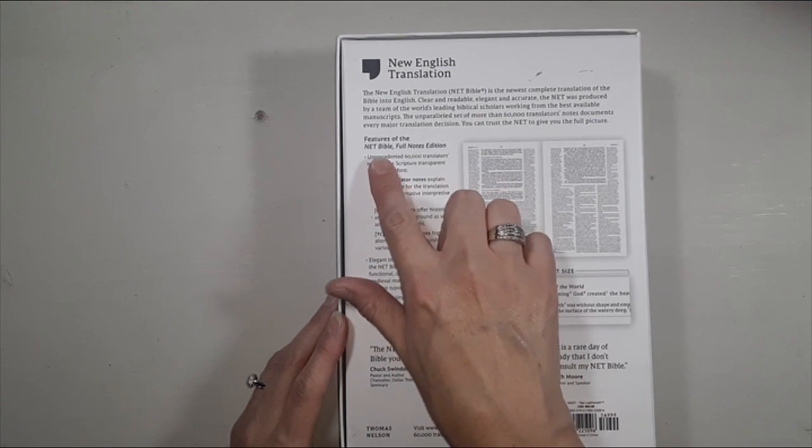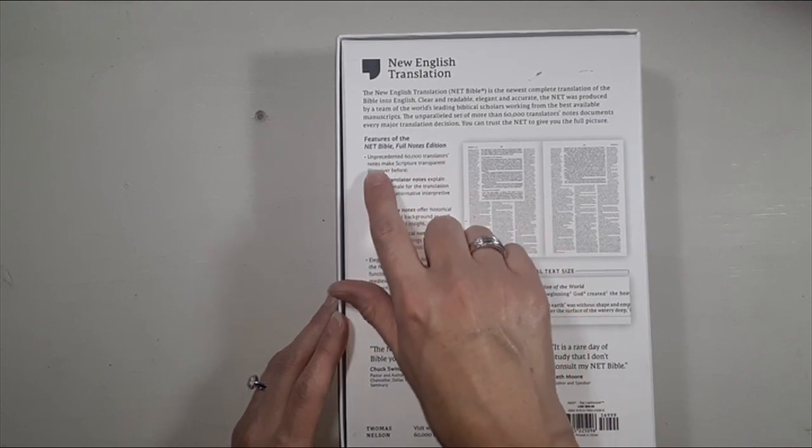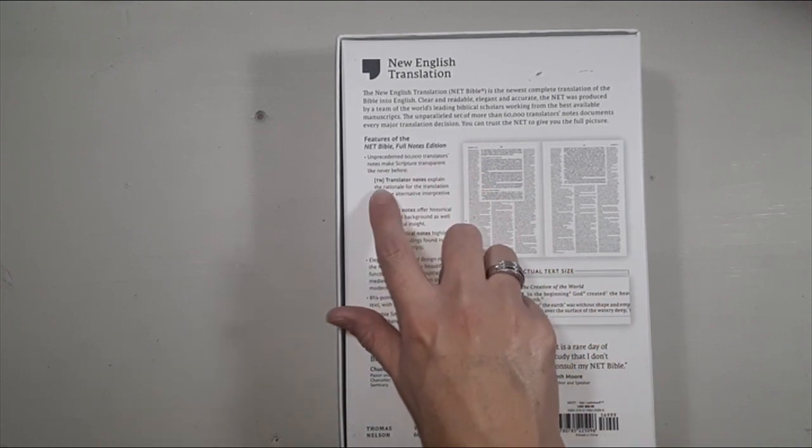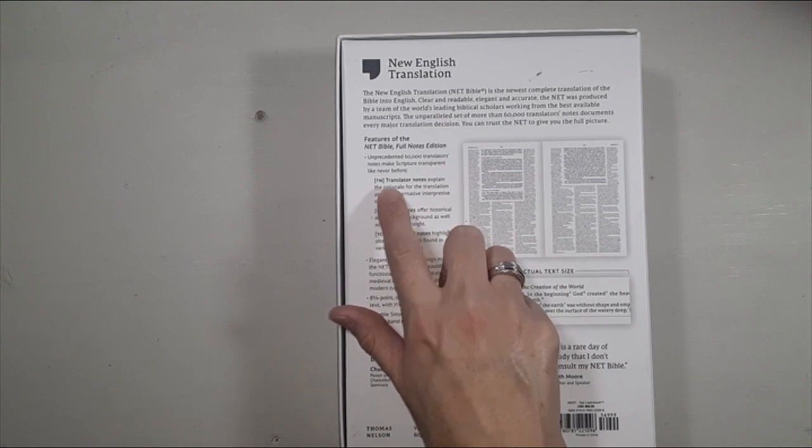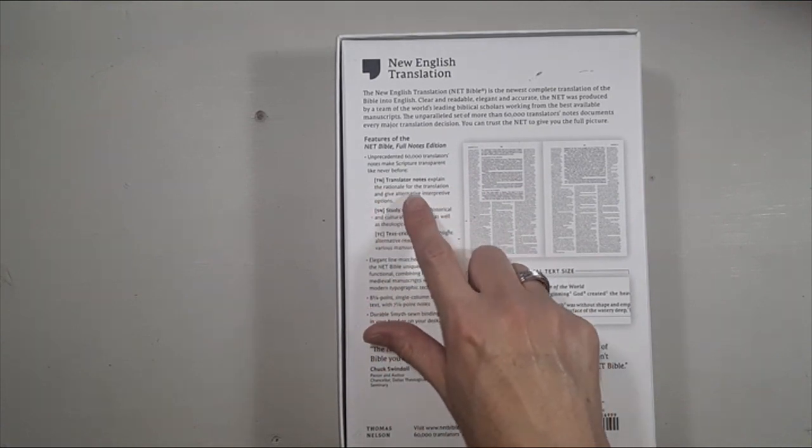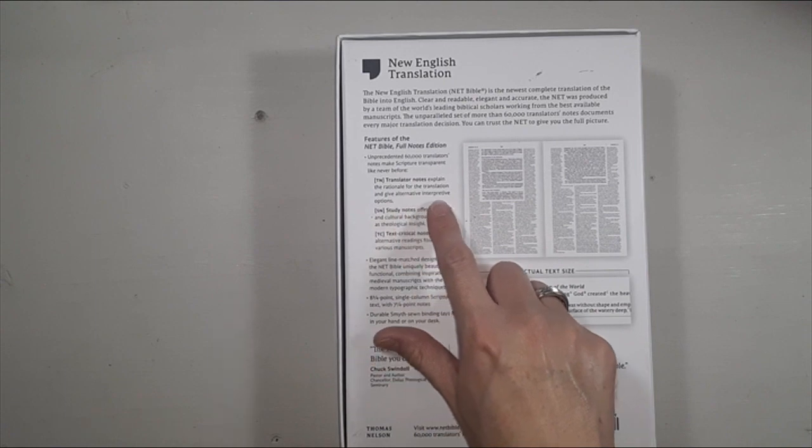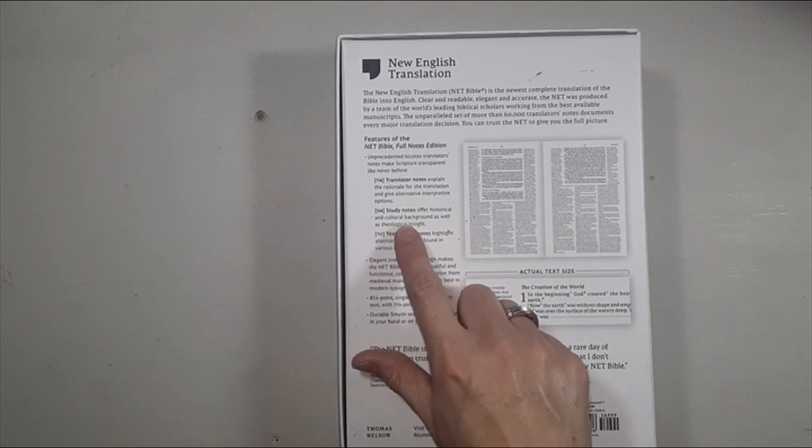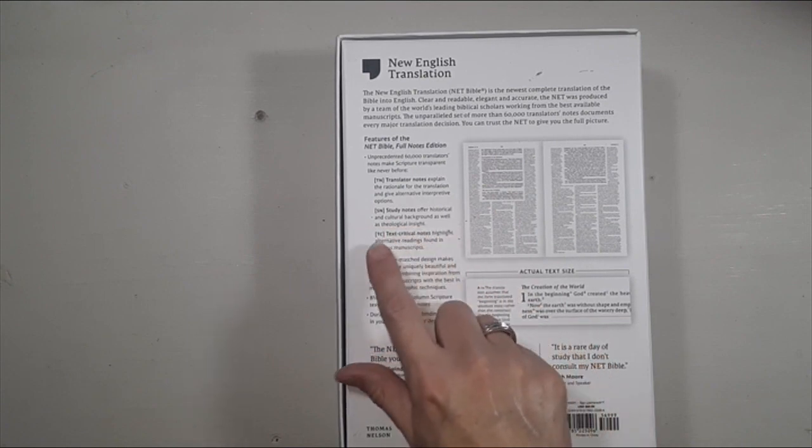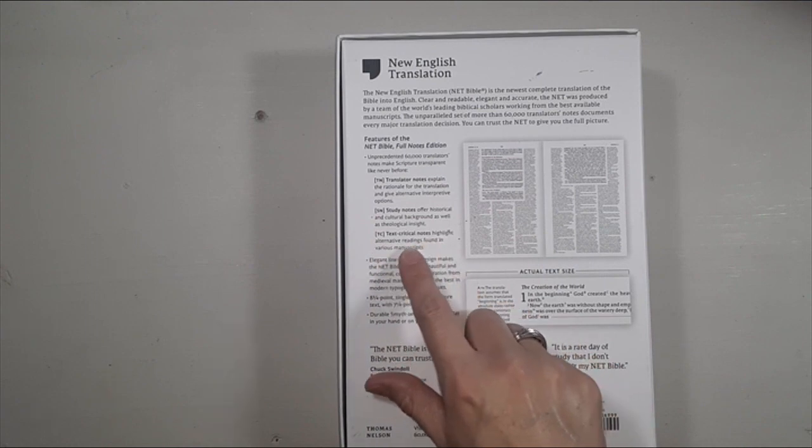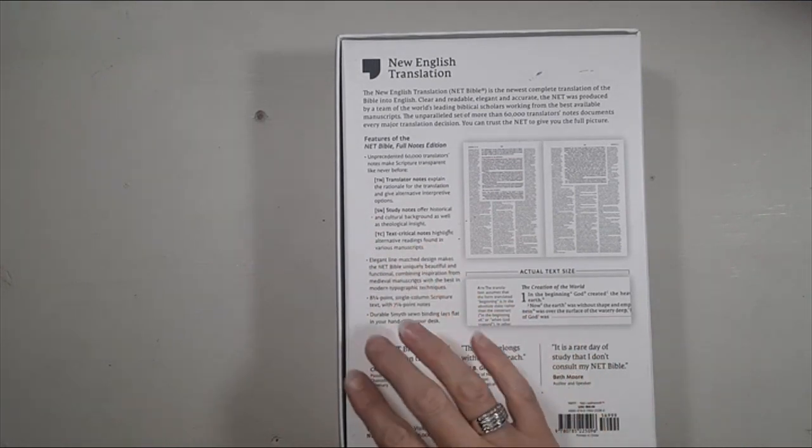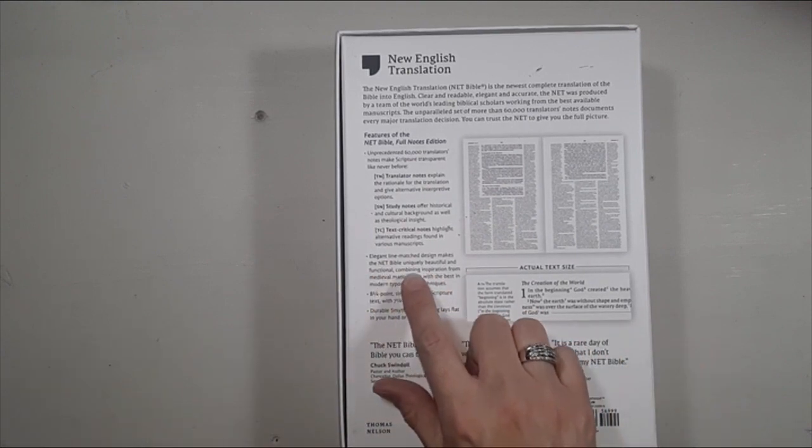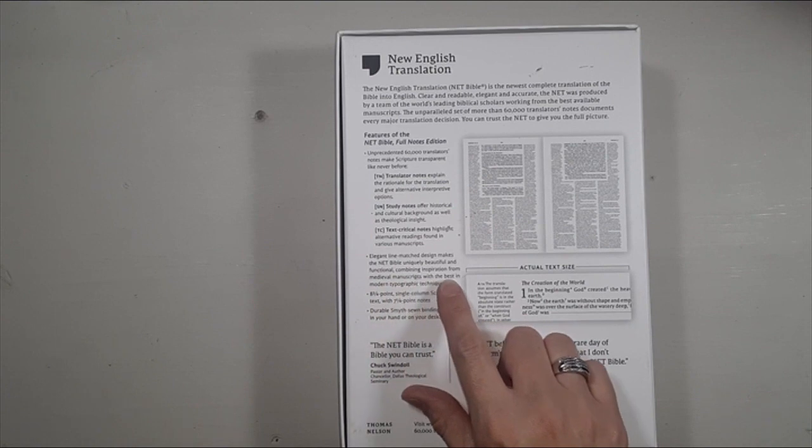It tells you features of the Bible: unprecedented 60,000 translator's notes make scripture transparent like never before. TN translator notes explain the rationale for the translation and give alternate interpretive options. SN study notes offer historical and cultural background as well as theological insight. TC text critical notes highlight alternative readings found in various manuscripts.